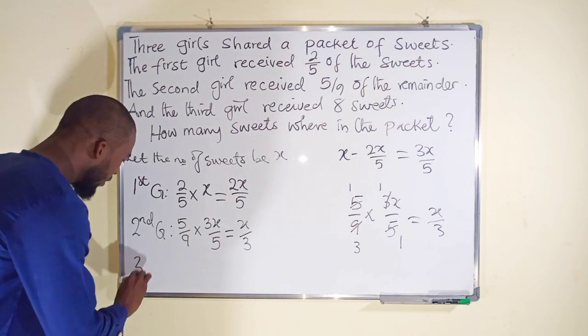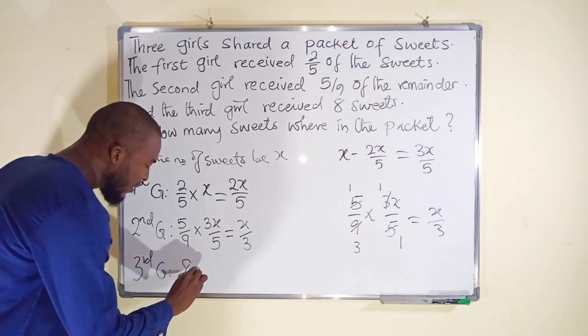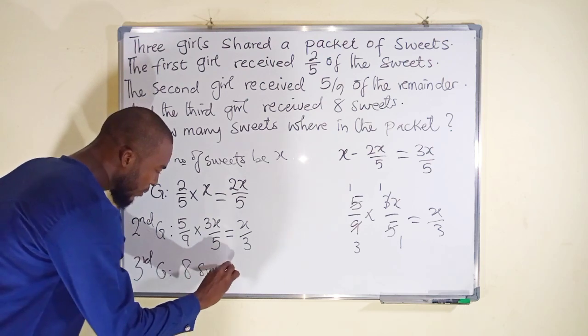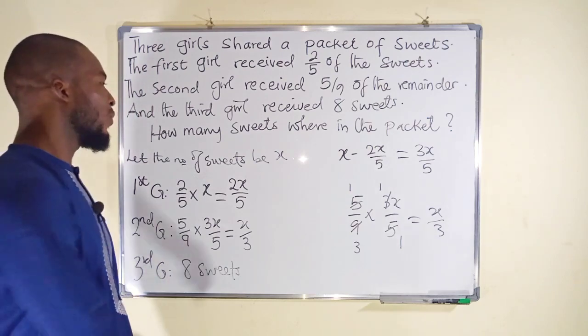Then the last girl, the third girl, she received eight sweets out of the total. But we don't know the total. That's what we are looking for.